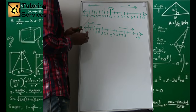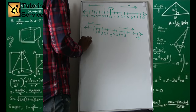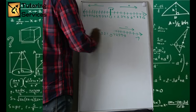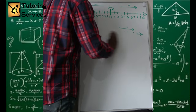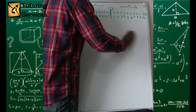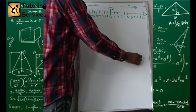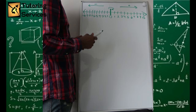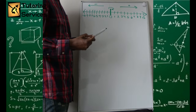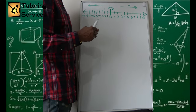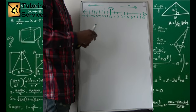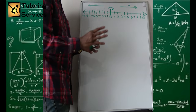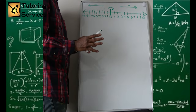This will be important as we start getting into two-dimensional and three-dimensional number lines — or as they're called, Cartesian coordinate planes. We'll get into that soon while we're still studying arithmetic. We don't have to jump into algebra yet, but it is very important that we know about this stuff.